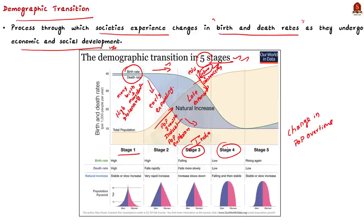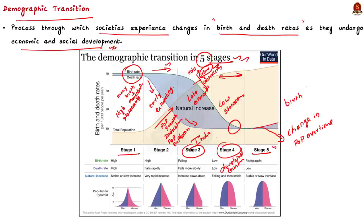Stage 4 is the low stationary stage, where both birth rates and death rates are low and population stabilizes. This stage is typically observed in developed countries with good healthcare, education, and a high standard of living. Finally, in Stage 5, birth rates may remain consistently low, even falling below replacement level — meaning the number of births is insufficient to replace the existing population. For instance, if 20 people die in a day but only 10 babies are born, this leads to population decline. This stage is mainly observed in Scandinavian countries and Japan.